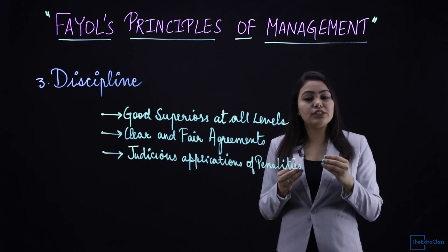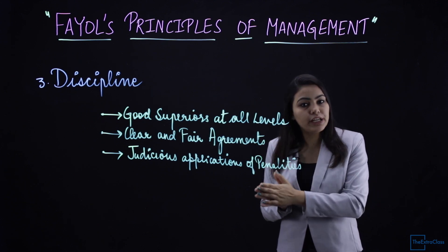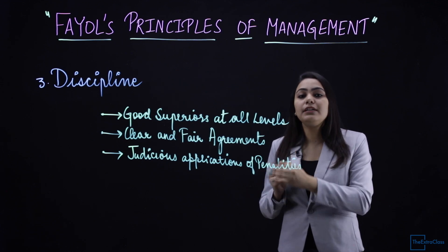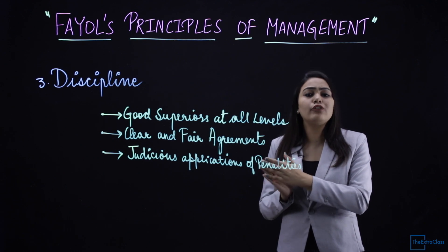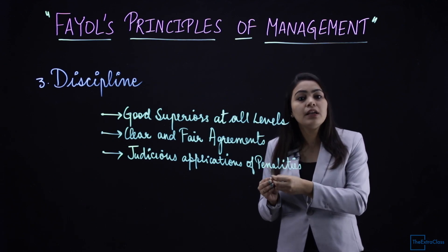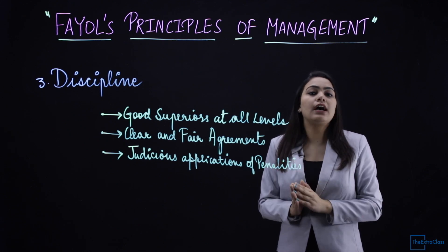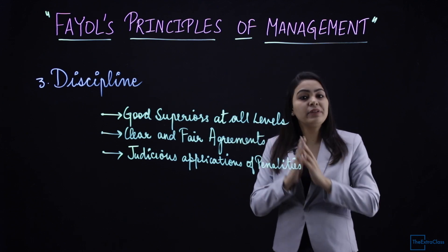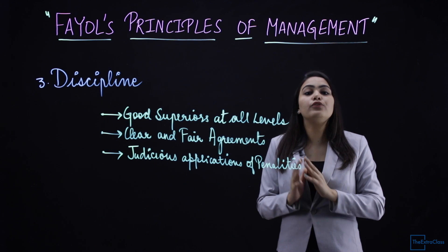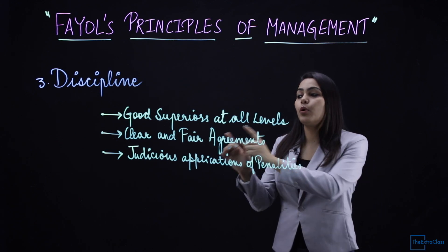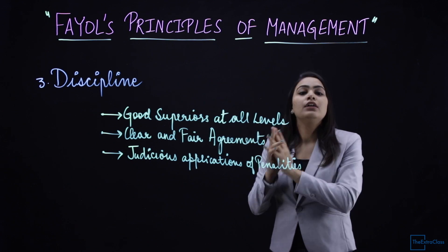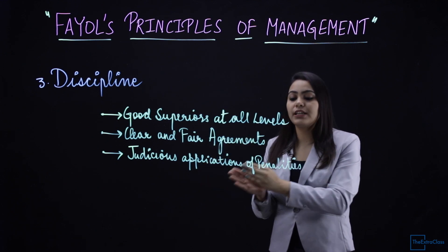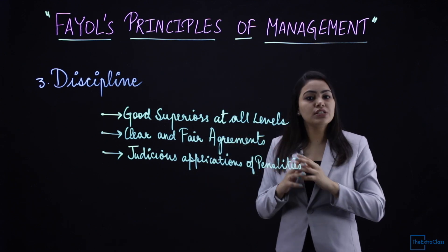The third requirement for discipline is judicious application of penalties. In an organization, employees are allotted a prescribed number of leaves per month. If an employee takes more than the prescribed leaves and remains irregular even after warnings, the company imposes penalties against them so that the organization's discipline is not violated. This is how discipline — respect and obedience towards the organization's rules — can be achieved.